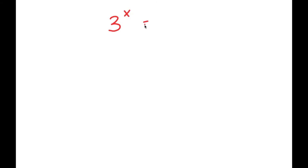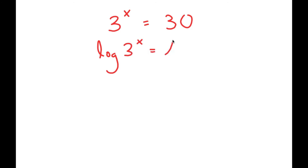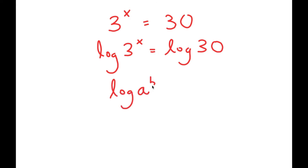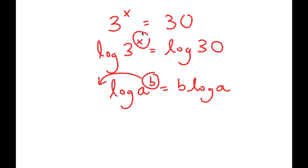In this video, I'm going to solve the equation 3 to the power of x equals 30. To solve this, I'm going to start by taking the log on both sides, so I get log of 3 to the power of x equals log of 30. Now, if I have something in the form log of a to the power of b, I can move b to the front, so this becomes b times log a. In this case I have log 3 to the power of x, and I can move x to the front. So I get x times log 3 equals log 30.